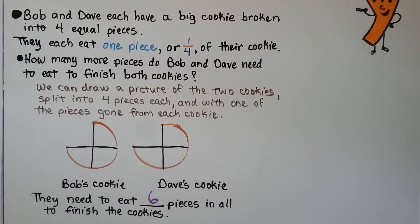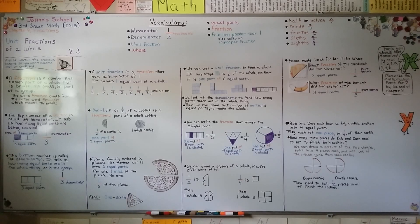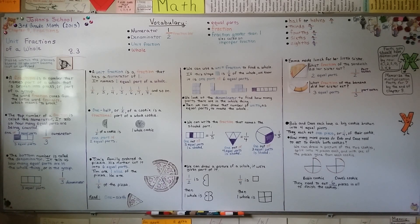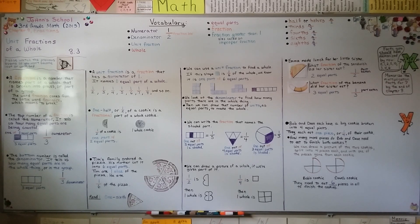Sometimes drawing a picture can help us see what we're trying to find. So remember, a unit fraction is a fraction that has a one as a numerator, and the bottom number — the denominator — tells us how many equal parts the whole thing was split into. We're going to talk about fractional parts of a whole thing in our next lesson. Keep trying — I think you'll do well, and have a nice day. Bye.